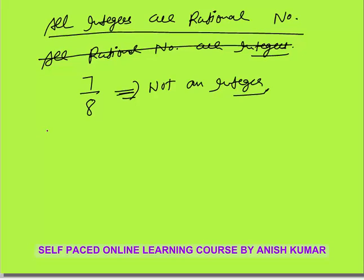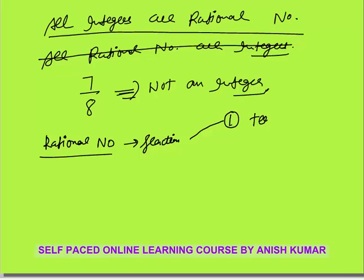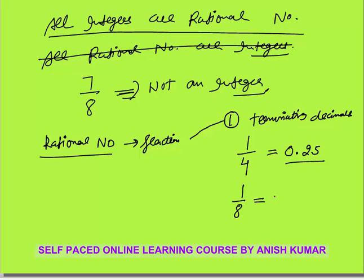Next, rational numbers in fraction form. There are two types of rational numbers which are in fraction form. The first type is terminating decimals. For example, 1 by 4 is a rational number — by definition P by Q, P and Q both are integers — and this equals 0.25. The decimal ends completely. Terminating means the decimal will end somewhere. Similarly, 1 by 8 equals 0.125, which is also a terminating decimal.